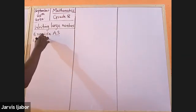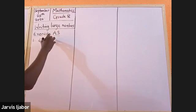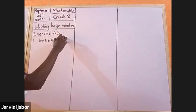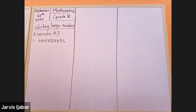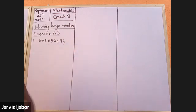So number one, the number written is: six, four, one, one, six, three, two, four, nine, six. When you're writing large numbers, you group from your left, moving towards your right.